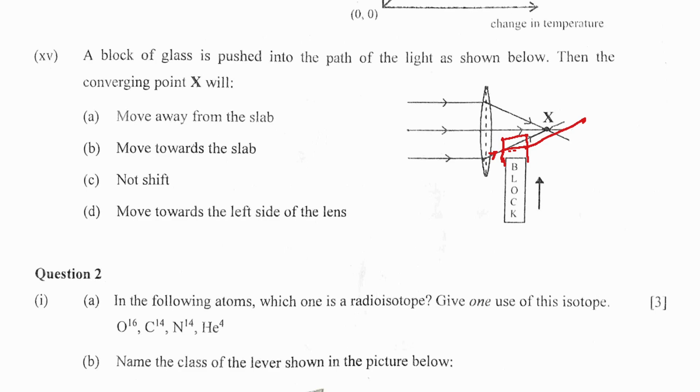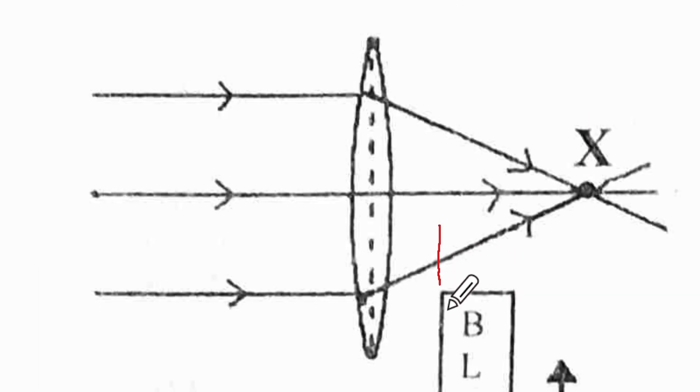Let us look at the diagram. This is the glass block. If we draw the normal, the ray is going from rarer to denser, so it will turn towards the normal. Then we have the ray emerging from glass into air, so it will emerge away from the normal and be parallel to this ray. This is the original direction of the incident ray. If you produce this, can you see where point X is? Point X has moved away from the lens.